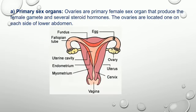Ovaries are the primary female sex organs that produce the female gametes and several steroid hormones. The ovaries are located one on each side of the lower abdomen.